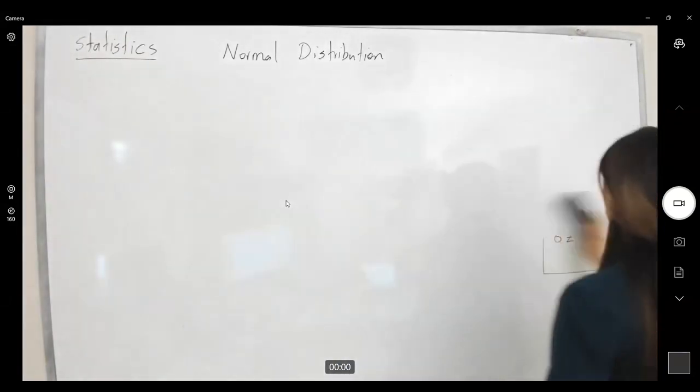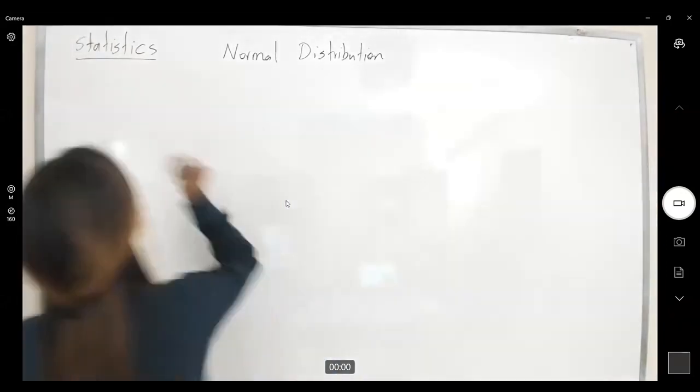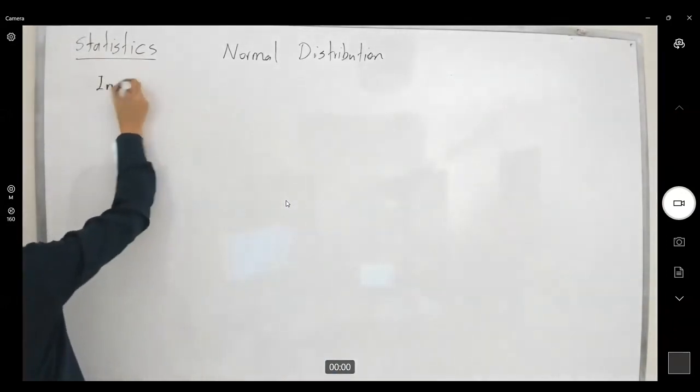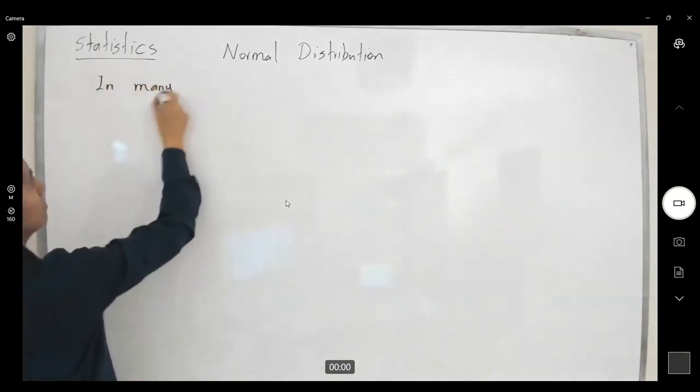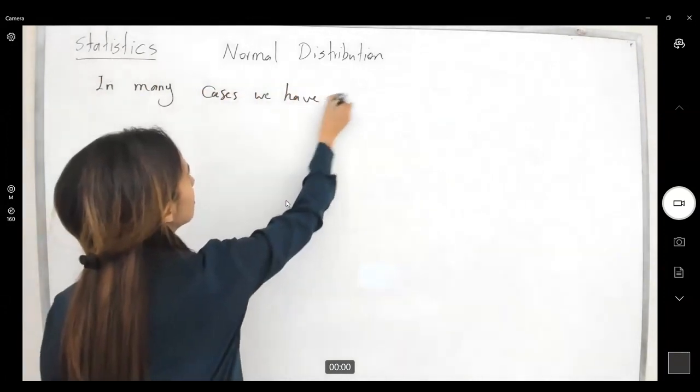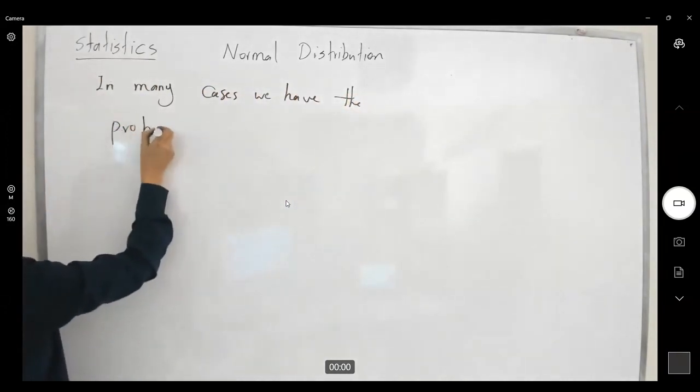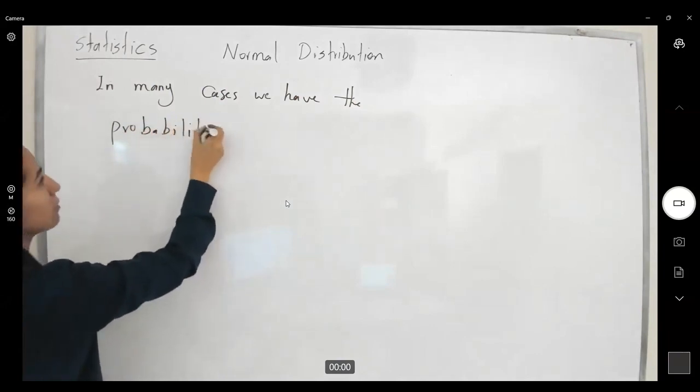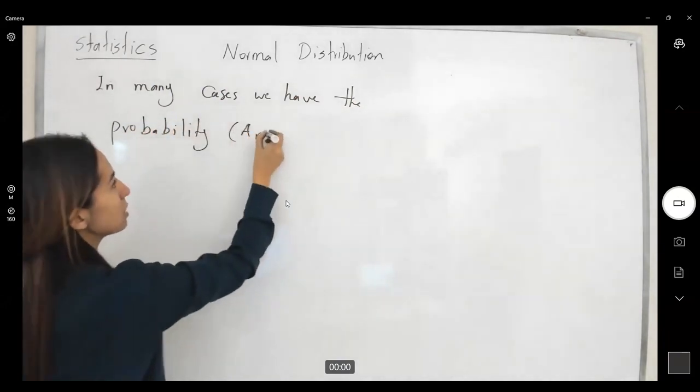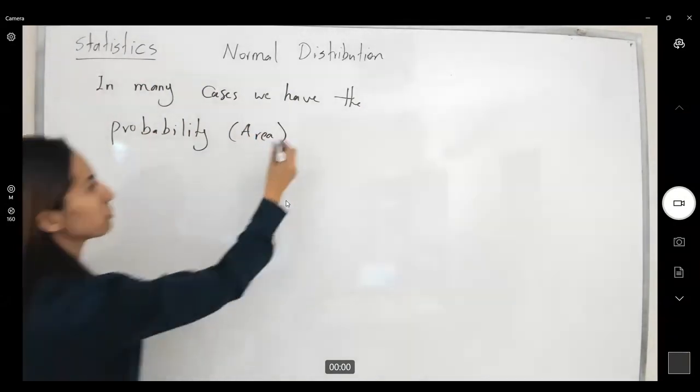So in many cases, we have the probability. Again, when you're talking about the probability, we're talking about the area below the curve.